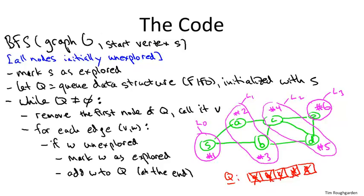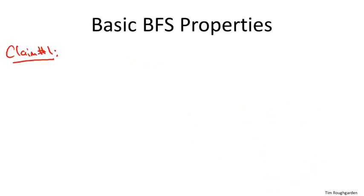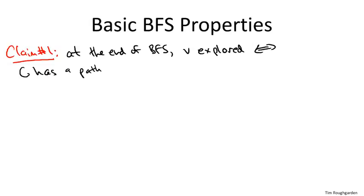At the end of the algorithm, the vertices that we've explored are precisely the ones such that there is a path from S to that vertex. And again, this claim is equally valid whether you're running BFS in an undirected graph or a directed graph. Of course, in an undirected graph, we mean an undirected path from S to V, whereas in a directed graph, we mean a directed path from S to V. That means a path where every arc in the path gets traversed in the forward direction.